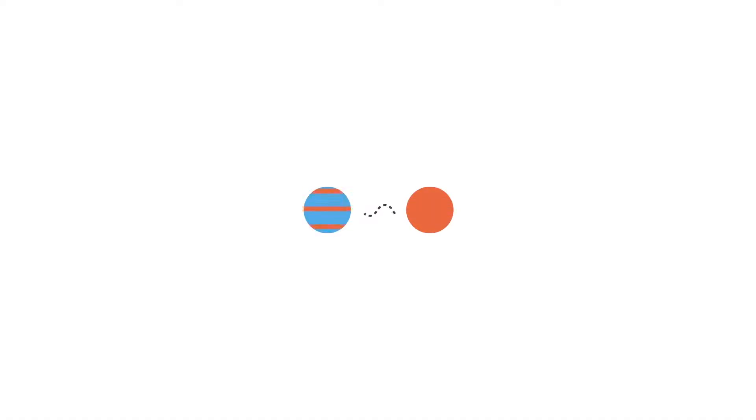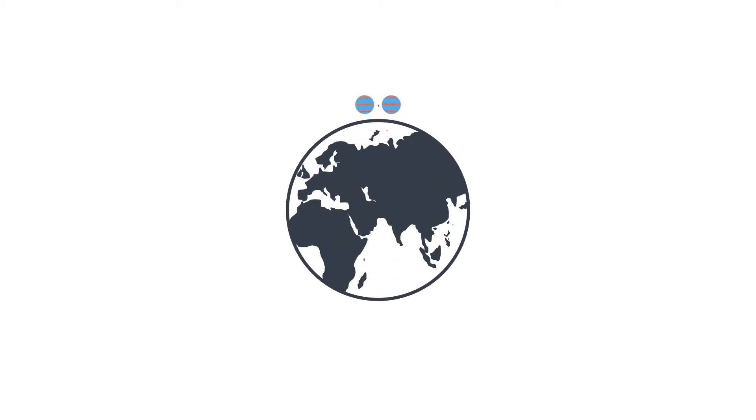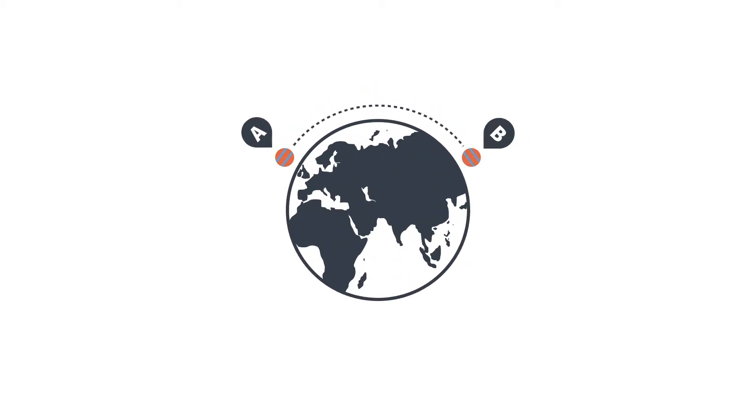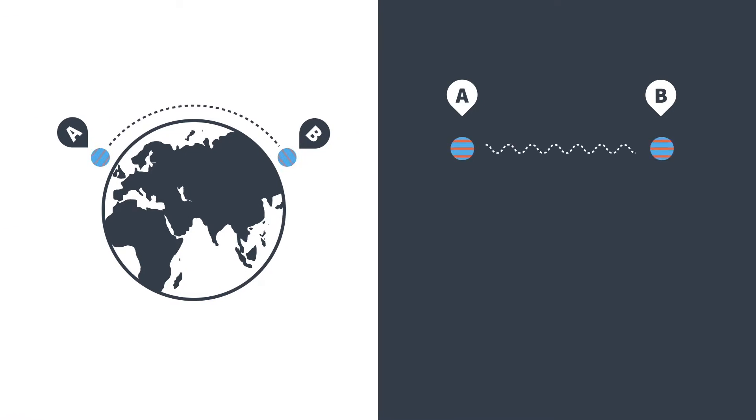When they are entangled, you can move them arbitrarily far apart from each other and they will remain entangled. This entanglement will manifest itself in the outcomes of measurements on these qubits.